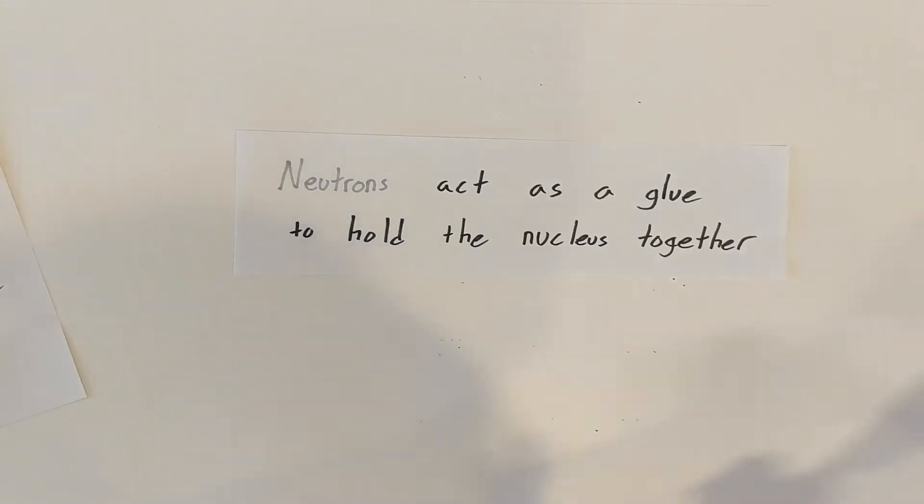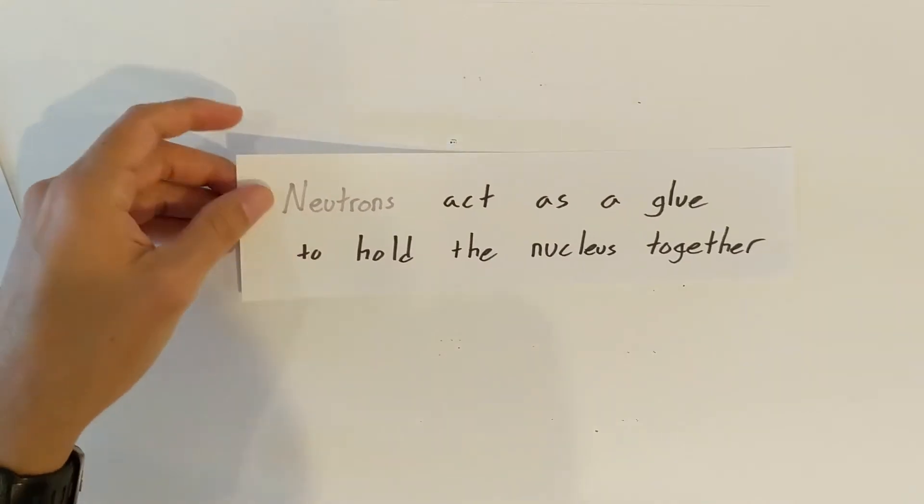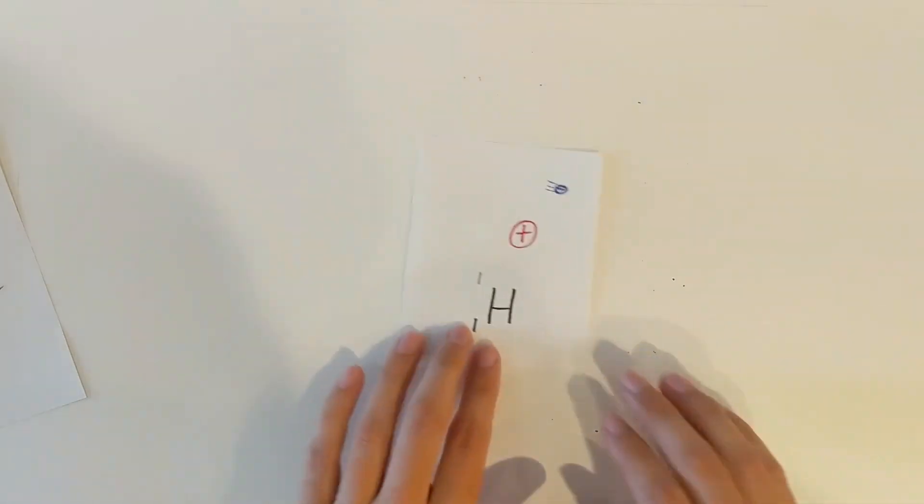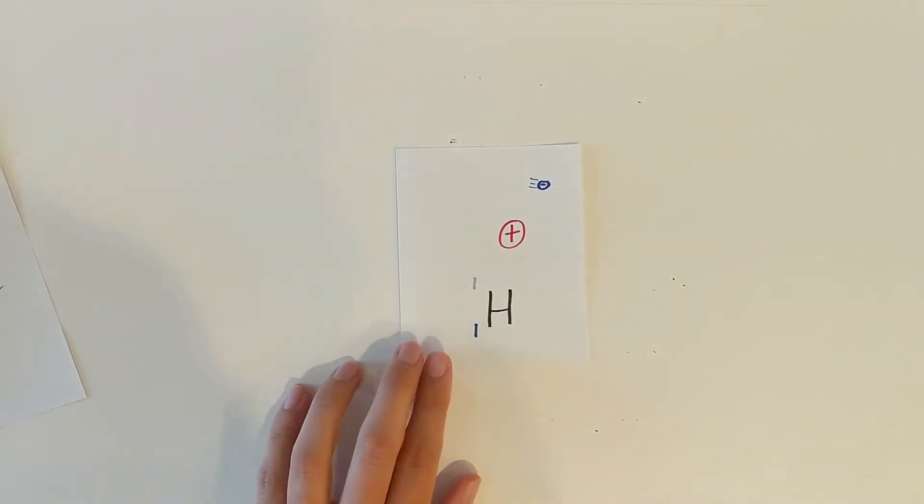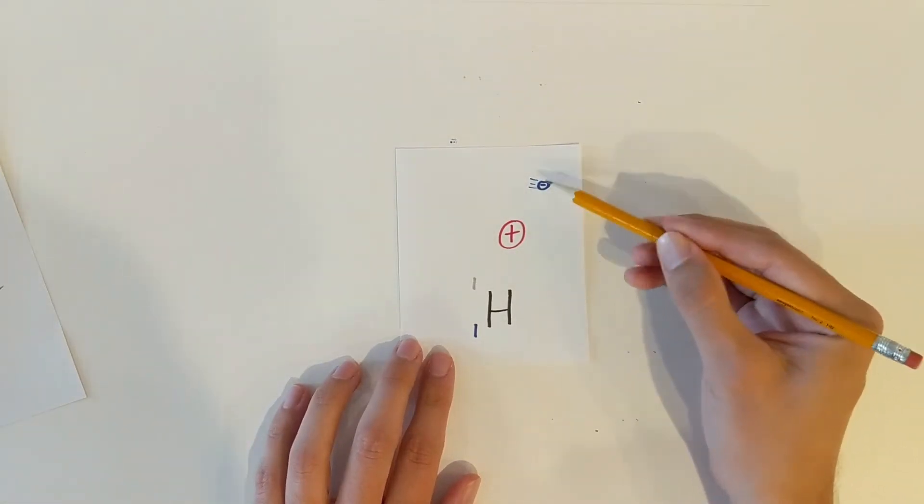I'm going to show you guys some examples of atoms I drew up and we'll write if they are stable or not. I don't expect you guys to be able to memorize this just by looking at it. But if we take a look at hydrogen one, it's got only one proton and one electron.